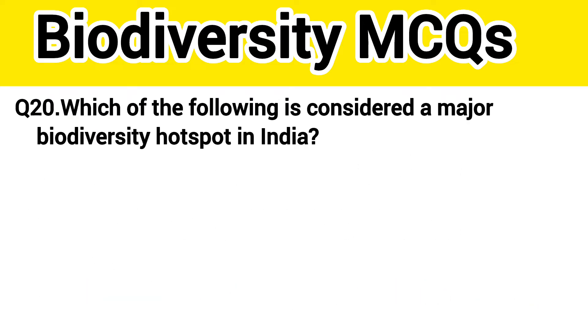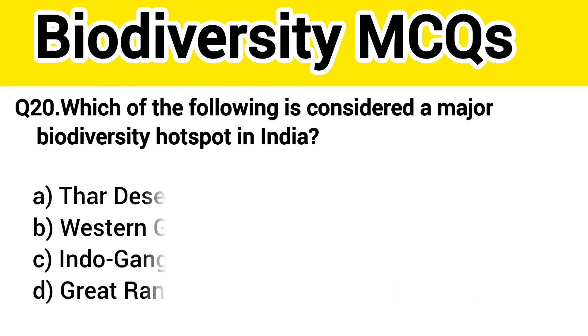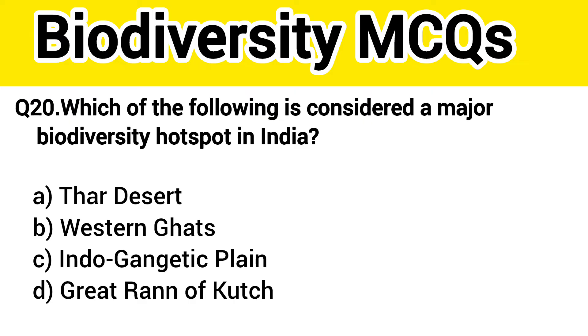Question number 21. Which of the following is considered a major biodiversity hotspot in India? The right answer, option B: Western Ghats.